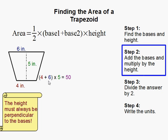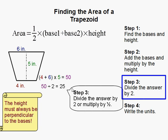So 4 plus 6 is 10, times 5 is 50. Next we divide that by 2, and that will give us 25.